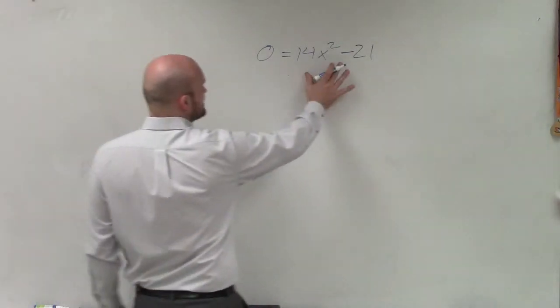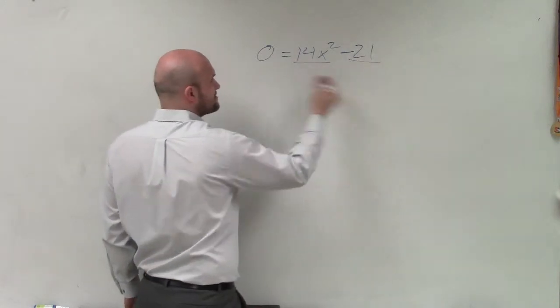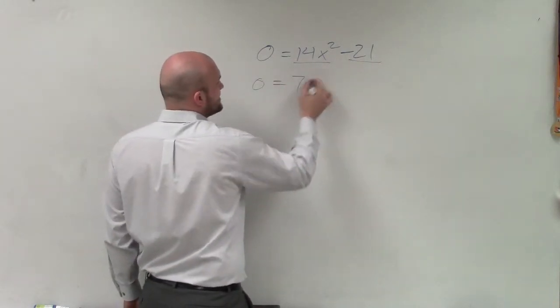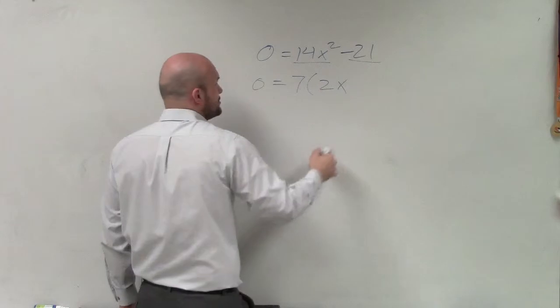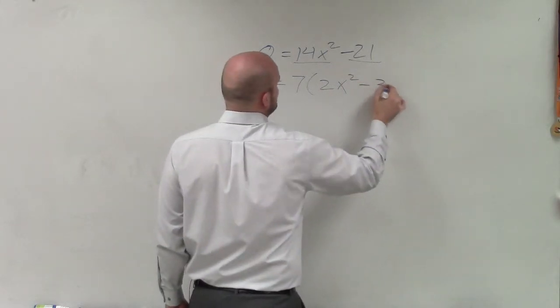So in this case, I can see I have a GCF between these two terms of 7. So I'm going to factor a 7 out. Therefore, I'm left with 7(2x² - 3).